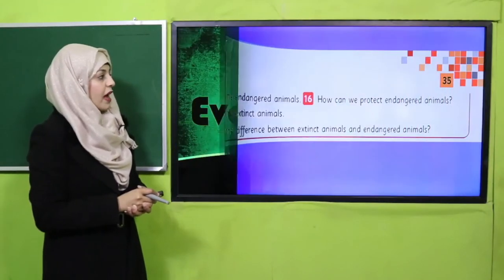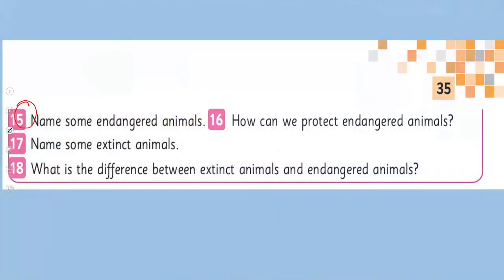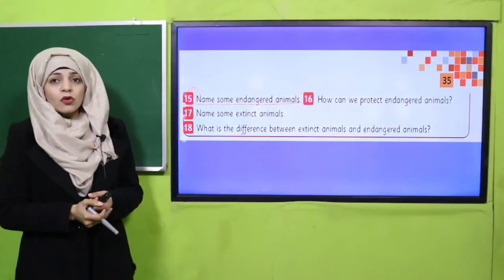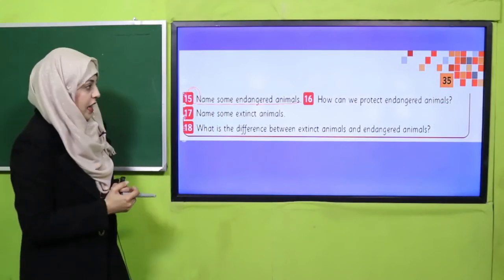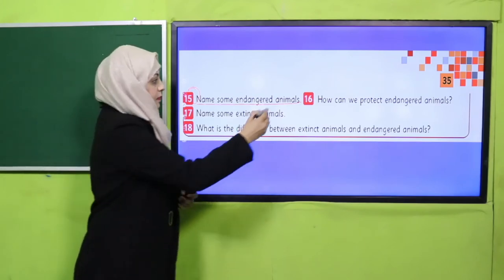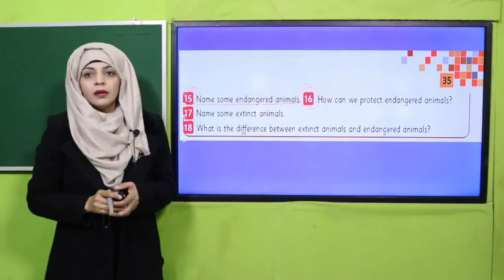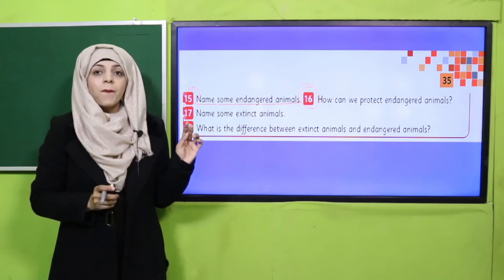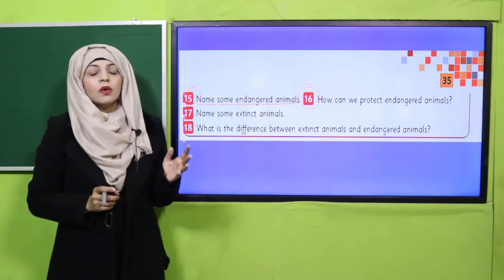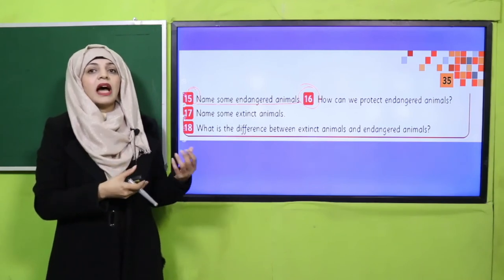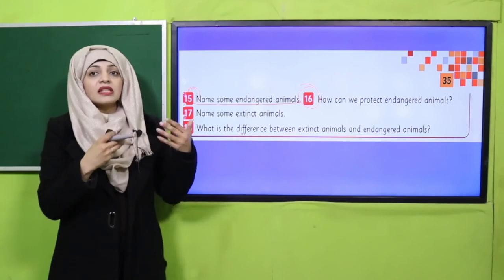Now is the time for evaluation given on page number 35. Name some endangered animals: Markhor, mountain weasel, Indus River dolphin, door mouse, Balochistan dwarf mouse. How can we protect endangered animals? Stop illegal hunting, restore natural habitat, spread awareness, and focus on their breeding so that new animals are born and their count increases.